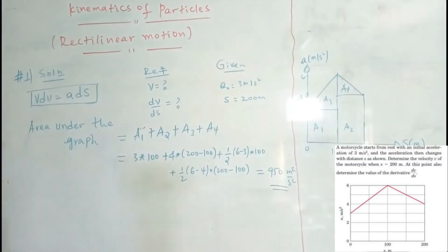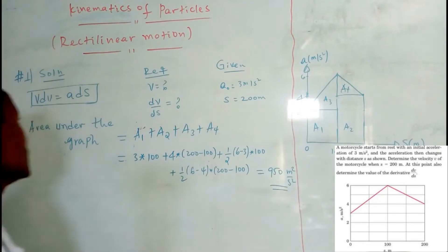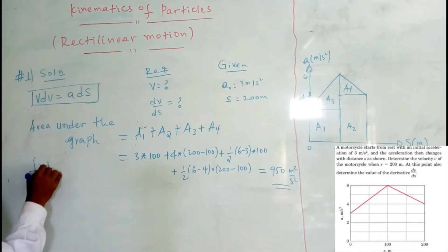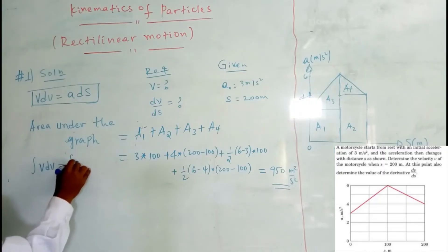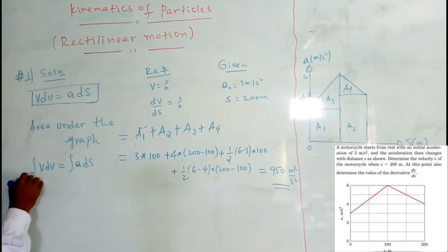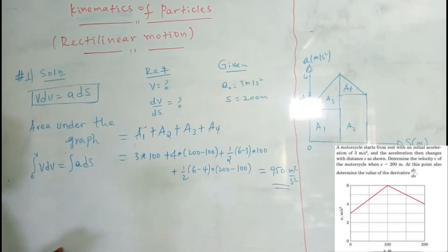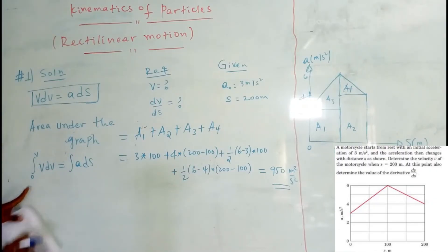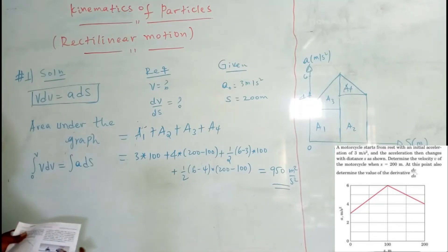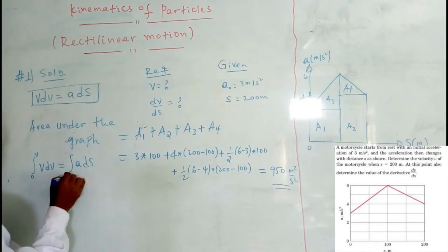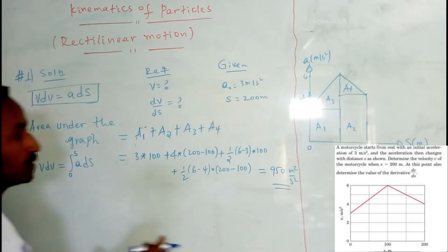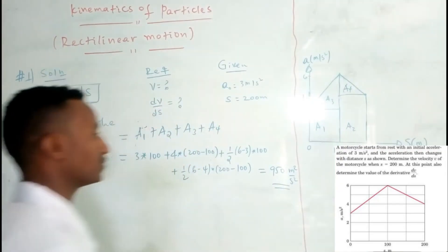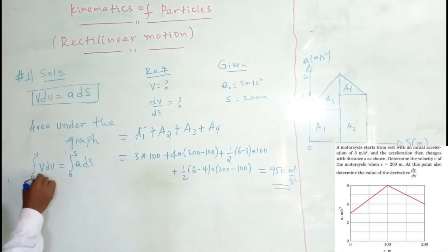The area under the graph equals one half v². We integrate from zero to v. Since the motorcycle starts from rest, the initial velocity is zero. The integration gives us v squared over two, which equals the total area under the graph.